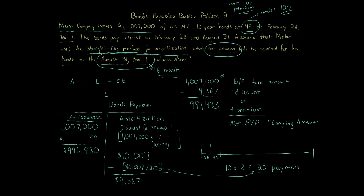If this were a premium instead, the process is the same — we just add it rather than subtract. We'd take the $1,007,000 and add the updated premium amount, such as $9,567. The straight-line amortization calculation works the same way. Practice it with a premium as well — the only thing that changes is you add to the bonds payable instead of subtracting.